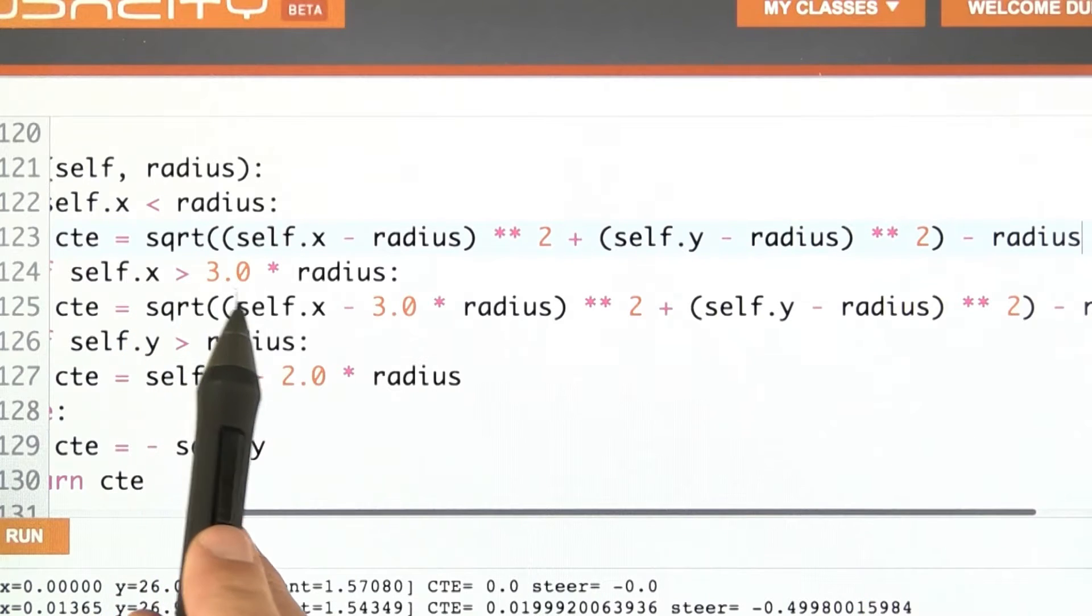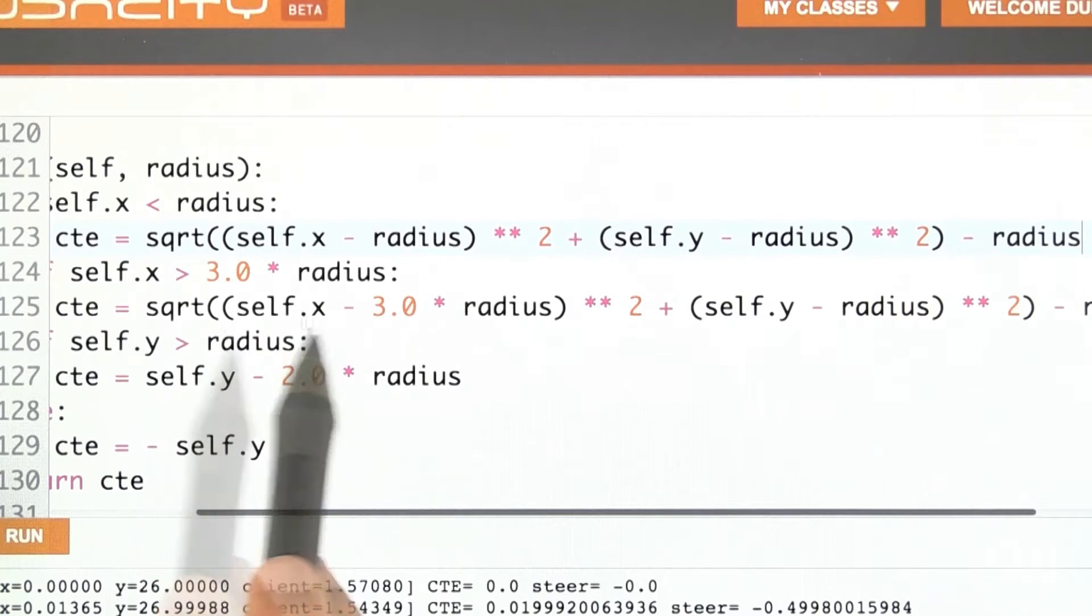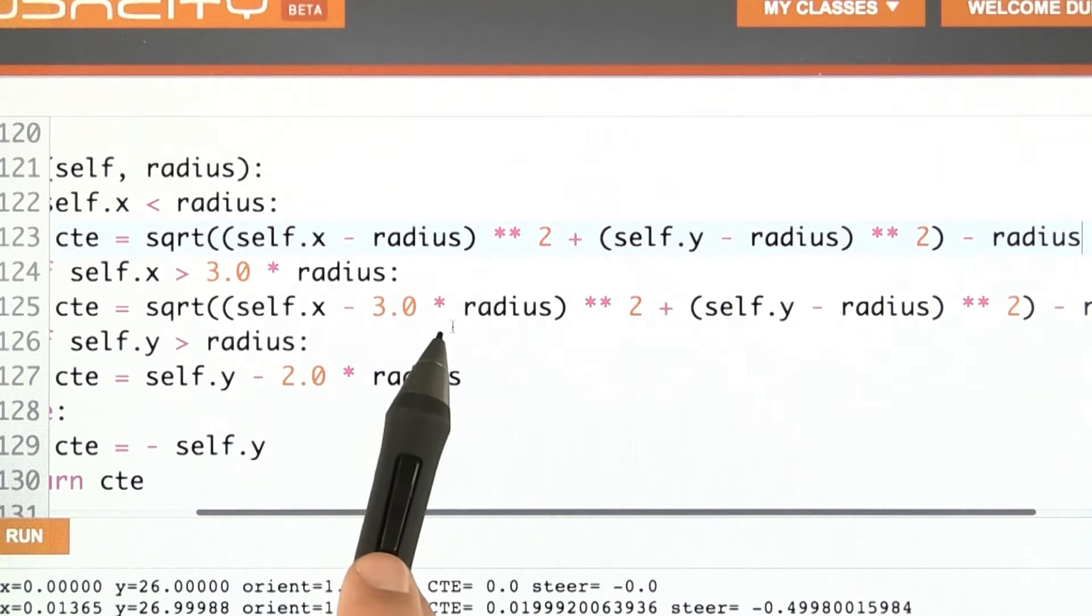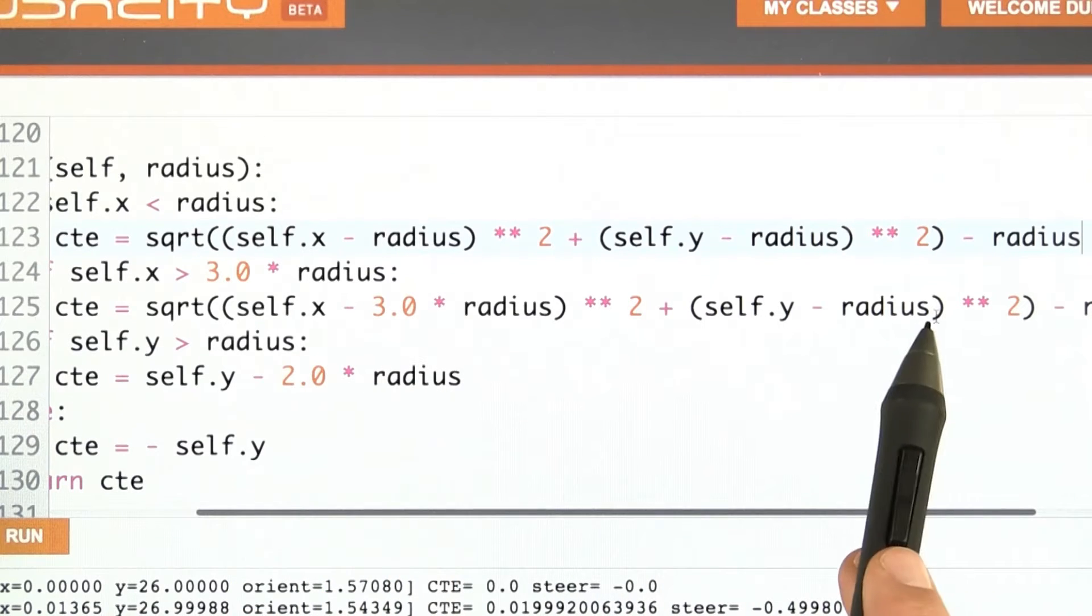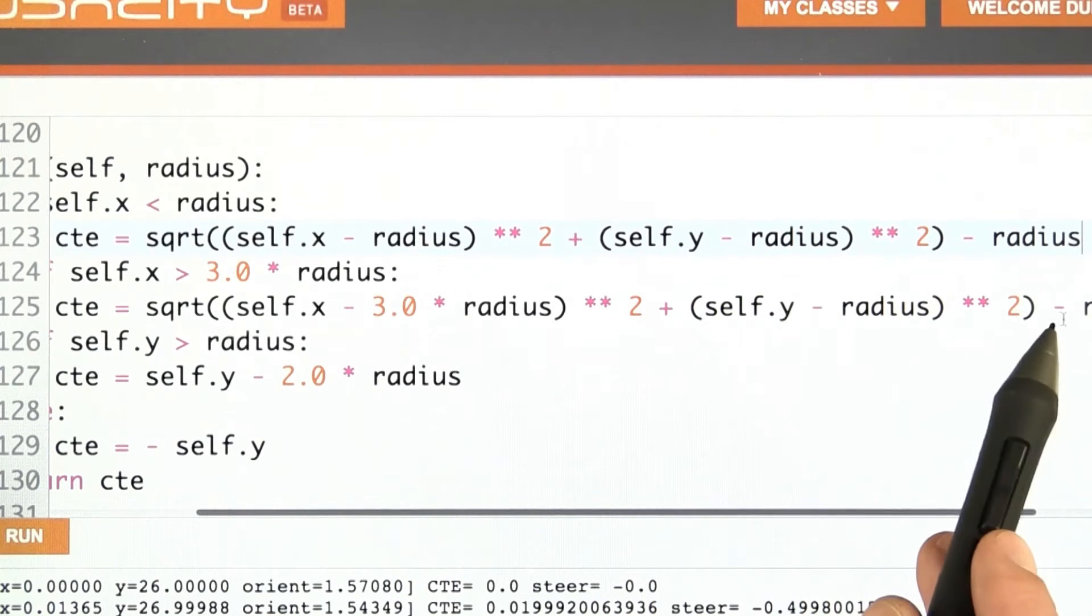If I'm more than three times over to the right side, I get a circle again. It looks like the one before, but now the center of the circle is further to the right by three times the radius. The rest is identical, so I'm subtracting the same radius on the right side. You can't quite see it, but it's there.